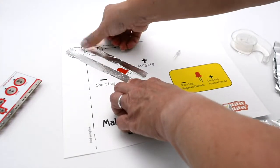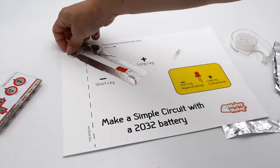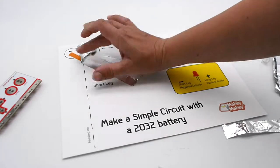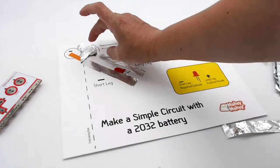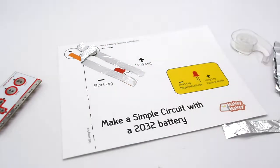So now we have a positive and a negative. What we're going to do is just place our battery right there. I'm going to go ahead and fold that over. Normally I'd fold the whole paper over, but just so we can see if our LED lights up. So we're going to fold our legs from our LED.